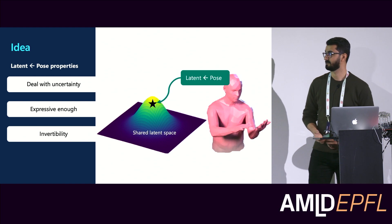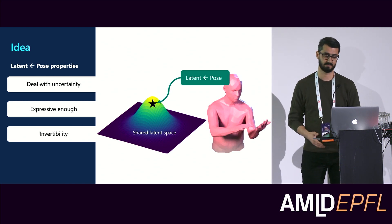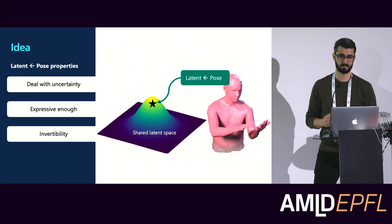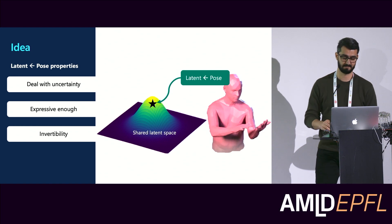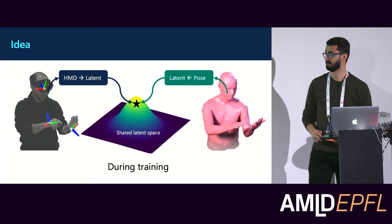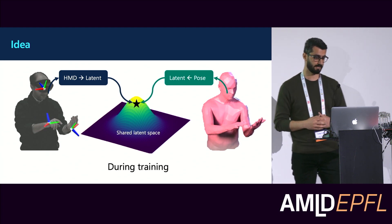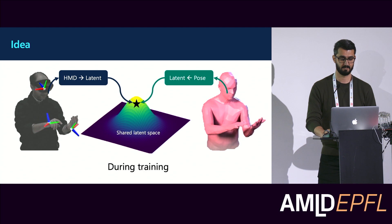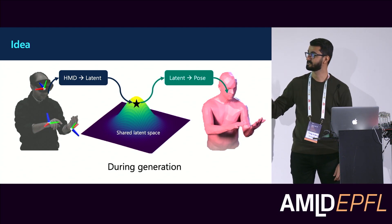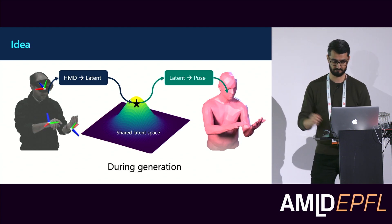For the same reasons, the other function — the mapping from pose to the latent space — should deal with uncertainty and be expressive enough. But more importantly, one key property of this function is invertibility. Because if we train these two models together to point to the same region in the latent space, what we are interested in at test time is to go from the head-mounted device signal to the latent space and use the inverse of the function to go from the latent code to the 3D pose.